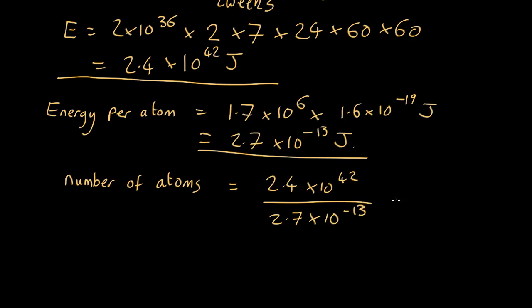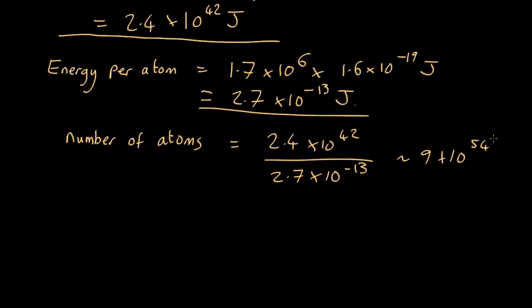Which is about 9 by 10 to the 54 atoms. But each atom weighs around 56 times the atomic mass unit, so you multiply this by that, you end up with about 10 to the 30 kilograms as your total mass of nickel-56, which is about half a solar mass.